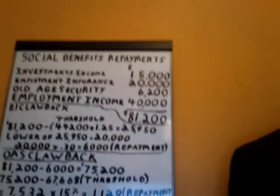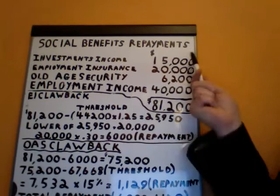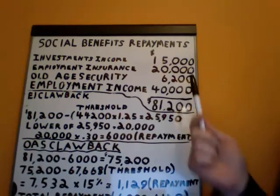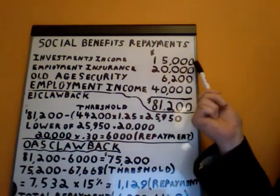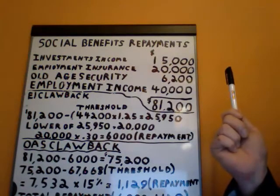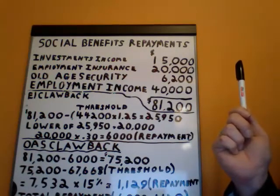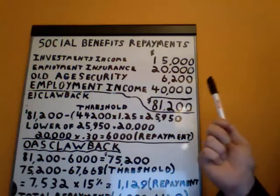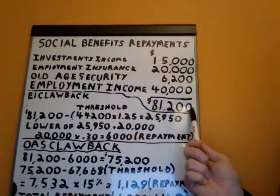Now if you've seen any of my other videos, you're probably familiar with my board. Social Benefit Repayments. Let's assume our individual — we're going to give him a name. His name is Jim and Jim is over the age of 65. He's received $81,200 of income made up of the following components: $15,000 in investment income, $20,000 in employment insurance benefits, $6,200 in old age security pension, and $40,000 in employment income — totaling $81,200.